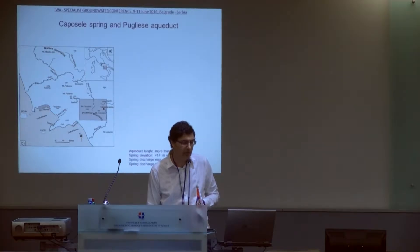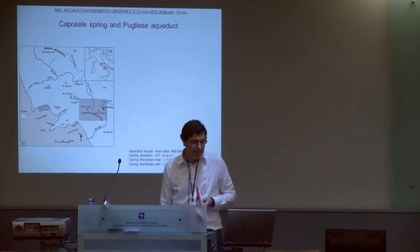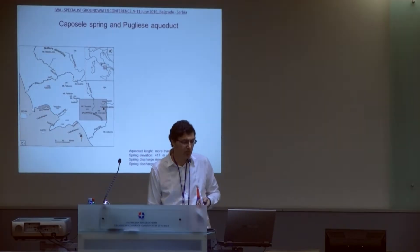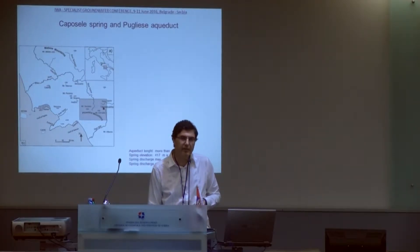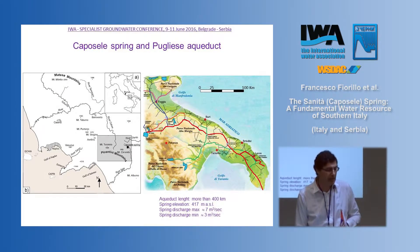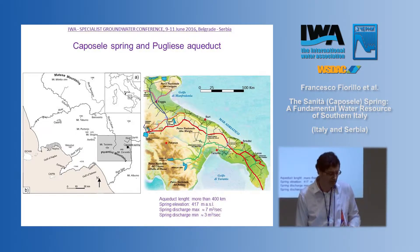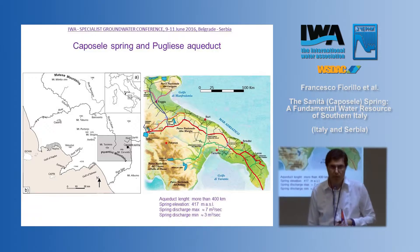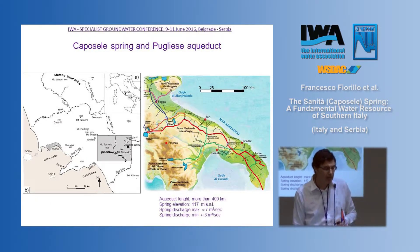This is a wide karst area located in the Campania region. These springs normally flow into the Sele River, but after being tapped 100 years ago by a tunnel 20 kilometers in length, the water crosses the water divide between the Sele River and the Ofanto River and feeds the Puglia region.